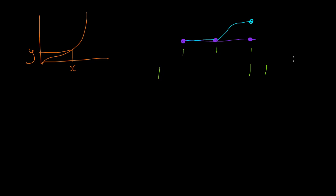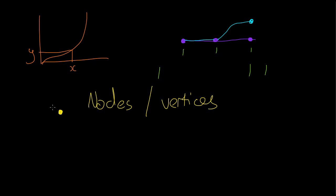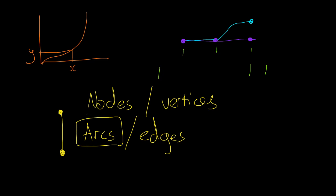It does not attempt to show any other property, for example whether the station is above or below ground. It doesn't attempt to show the distances or the times between the stations. Looking at it more technically, in discrete maths we have the dots — like the stations — and these can be called nodes, also written as vertices. And then we have the lines joining the dots, which we call arcs, or sometimes edges, but mostly you'll see them referred to as arcs and nodes.